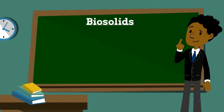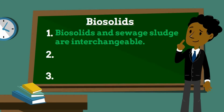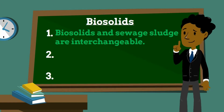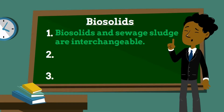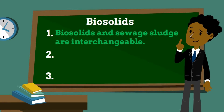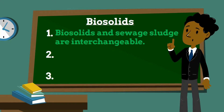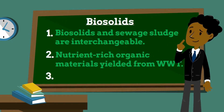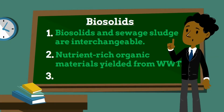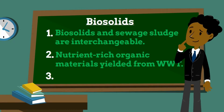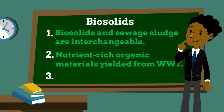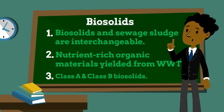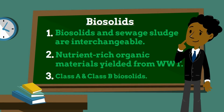Regarding biosolids, there are some facts you should know. The terms biosolids and sewage sludge are often used interchangeably, and the term sewage sludge is used in EPA regulations to establish a protective regulatory framework to manage the use and disposal of sewage sludge. Biosolids are simply treated sewage sludge — when properly treated and processed, sewage sludge becomes biosolids, which are nutrient-rich organic materials produced from wastewater treatment facilities.